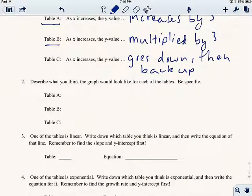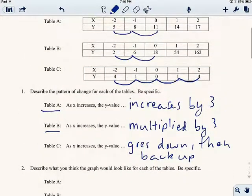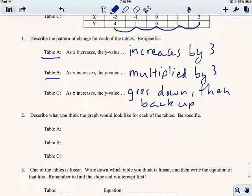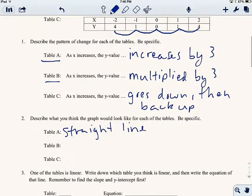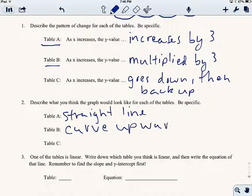So now let's look at the next questions. What do you think the graph would look like for each of the tables? Well, we sort of recognize what these should look like. So Table A, we know that's linear, so that's going to be a straight line. And Table B, that's going to be exponential growth, so we expect that to curve upward.